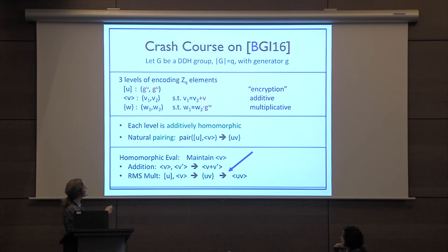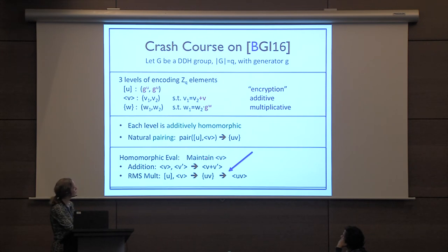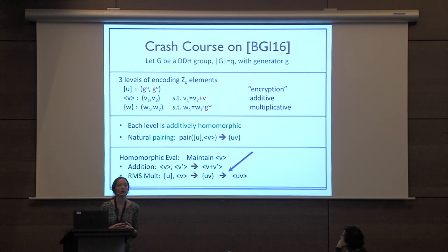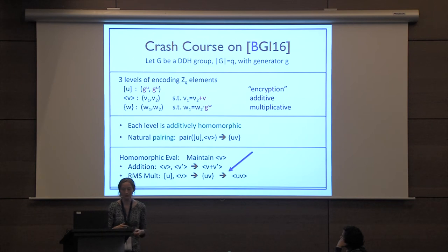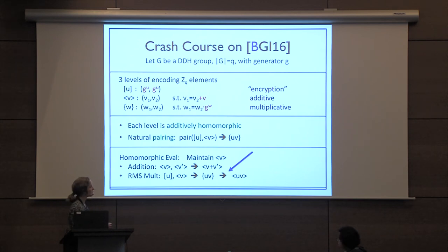For homomorphic secret sharing: as part of the secret shares of an input, each party gets level-one and level-two encodings of the inputs. During homomorphic evaluation we maintain the invariant that for any partial computation value, we hold additive shares of that value across both parties. Addition follows directly from additive homomorphism. For RMS multiplication, using the pairing procedure takes us to level-three shares of the product.